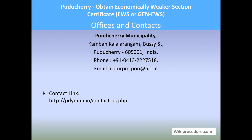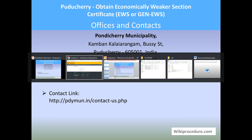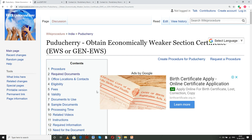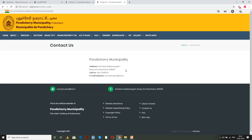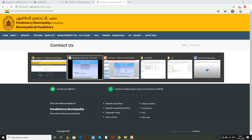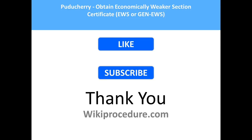Offices and contacts: Puducherry Municipality, Kamban Kalangarangam, Puducherry — phone and email details are provided. In our wikiprocedure page under 'Office Location and Contacts,' we have provided these details along with a link to the contact page for your communication. Hope this video helped you. Don't forget to give us a like and subscribe. Thank you for visiting wikiprocedure.com to know how to obtain the Economically Weaker Section Certificate EWS in Puducherry.